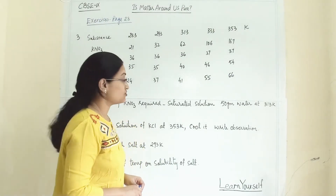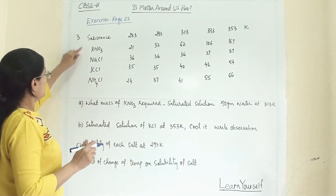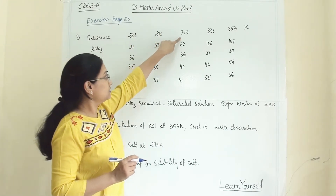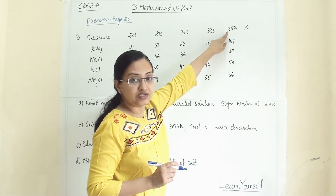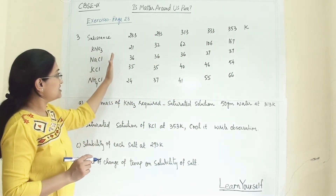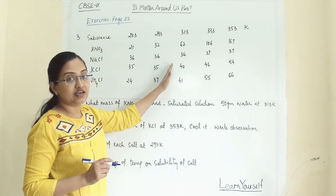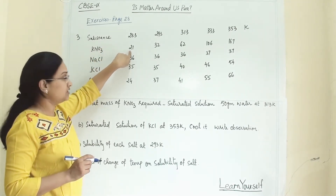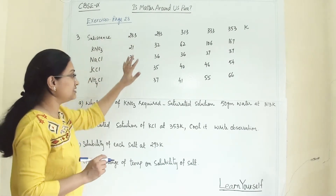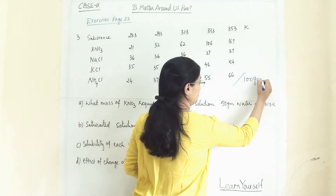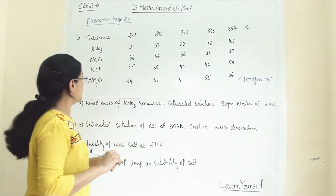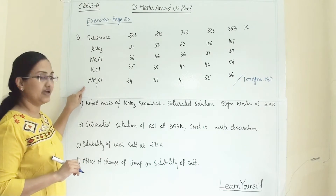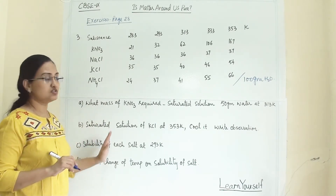The third question is based on solubility. We are given solubility data for substances at 283, 293, 313, 333, and 353 Kelvin. The data represents solubility per 100 grams of water. The salts given are potassium nitrate (KNO3), sodium chloride (NaCl), potassium chloride (KCl), and ammonium chloride (NH4Cl). We have to answer questions based on this data.